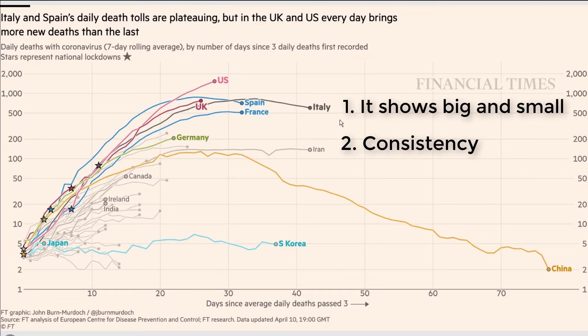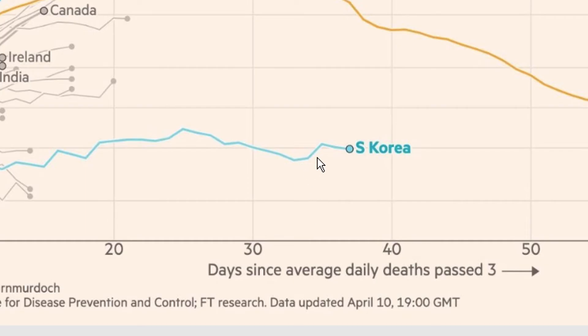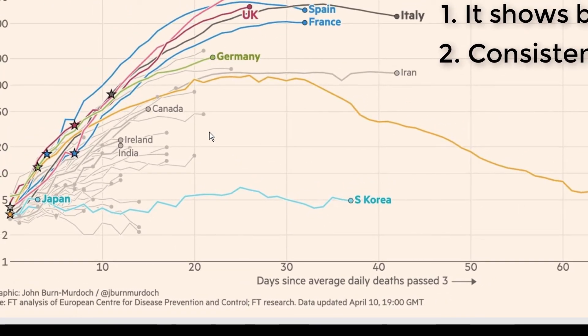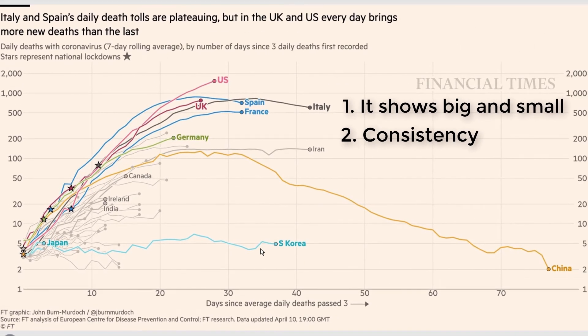The second benefit is what I like to call consistency. And what I mean by that is that a movement of, say, this distance down the bottom of the chart is actually equivalent in significance to that same distance movement in the top of the chart. So let's just say this little bump that South Korea experienced at around day 35. It's a small little bump here, but you can see it's about the same size as the bump that China experienced around day 20. Now, those two bumps represent the same proportionate increase in daily deaths for both South Korea and China at the time.